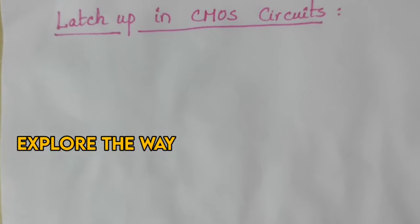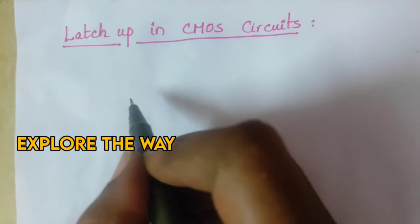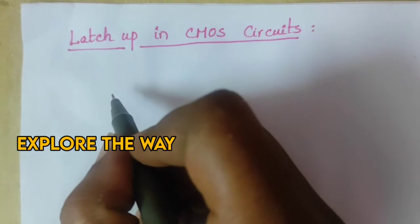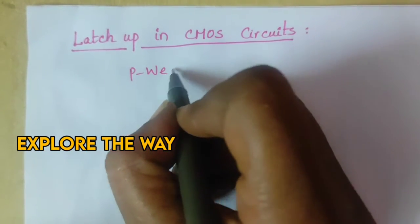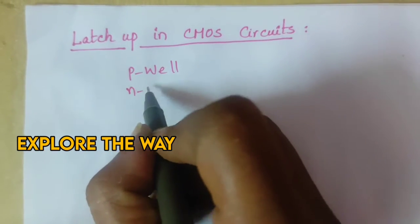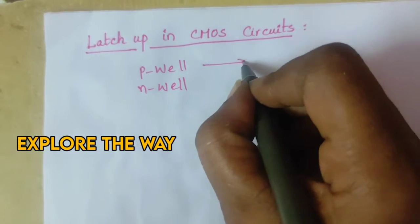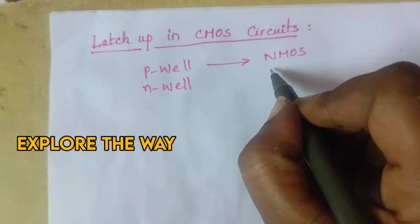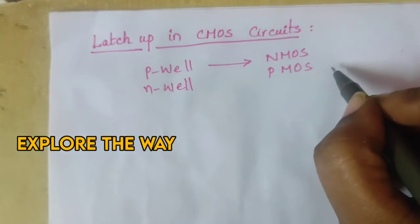Let us see the structure of a CMOS circuit. A CMOS circuit can be fabricated using either a P-well process or an N-well process. In the P-well process, the N-MOS transistor is housed in the P-well, and the P-MOS transistor is housed in the native substrate, that is the N-substrate.